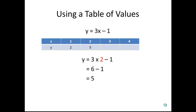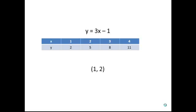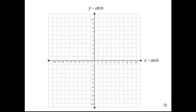We then repeat this for each of the x values in the table. From this table, we can see that the coordinates for this line are negative 1, negative 2, 2, 5, 3, 8 and 4, 11. We can now plot these points on the Cartesian plane. We can then join these points by drawing a straight line through them.